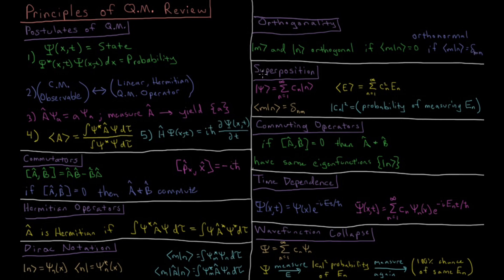The superposition principle describes what happens when a wave function is not in an eigenstate of the Hamiltonian. The wave function can be represented as a linear combination of all eigenfunctions, with a coefficient in front of each. Because those are eigenfunctions of the Hamiltonian, they are orthonormal to one another. The expectation value of a property can then be calculated as a sum over all states of the coefficient squared times the energy of that state. The probability of measuring any specific energy is given by the square of the coefficient for that state.